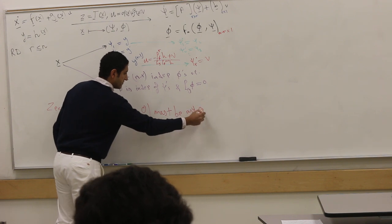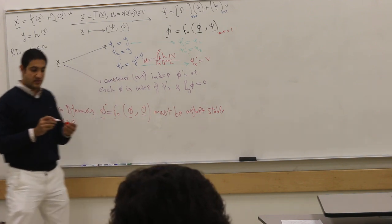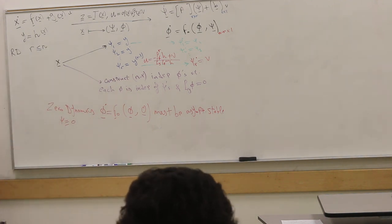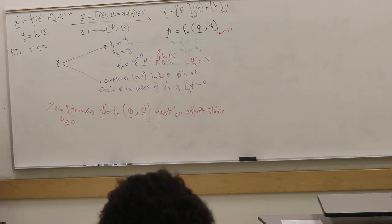By zero dynamics, you mean if ψ is identically zero. The zero dynamics is φ dot equals some function of φ and zero. This must be asymptotically stable on its own. If it's the case, we call the system minimum phase.